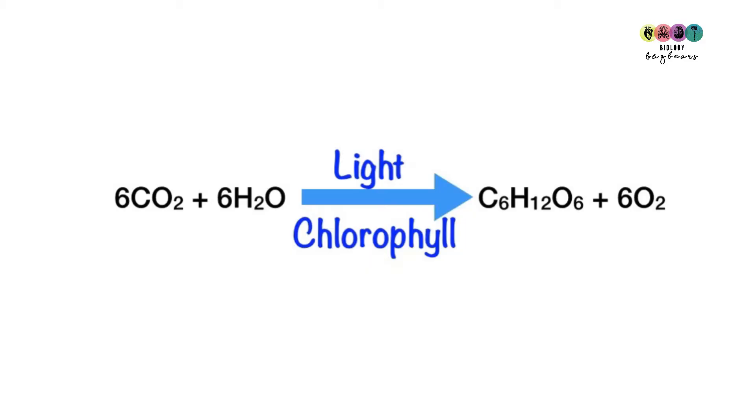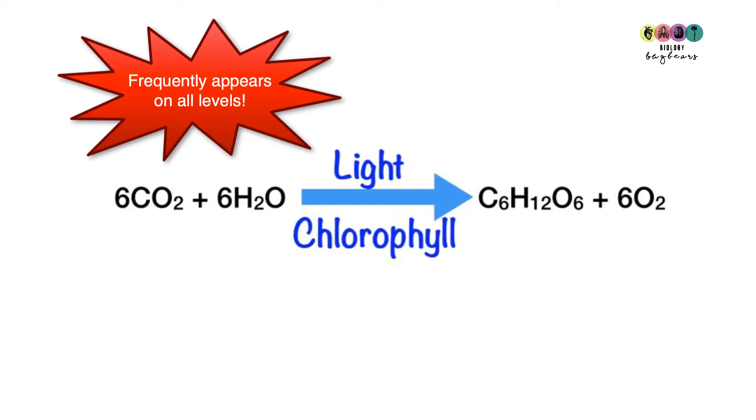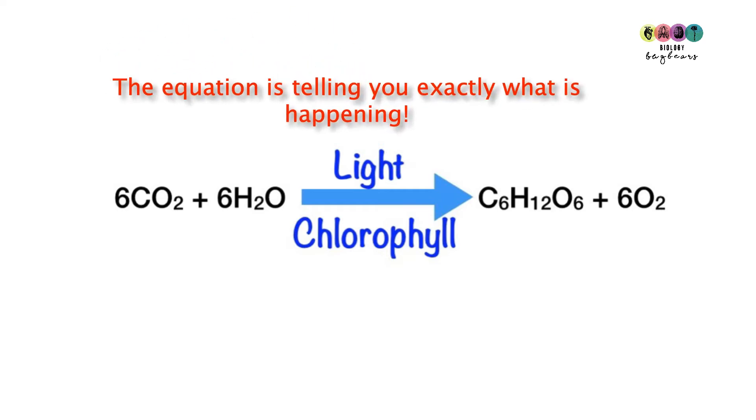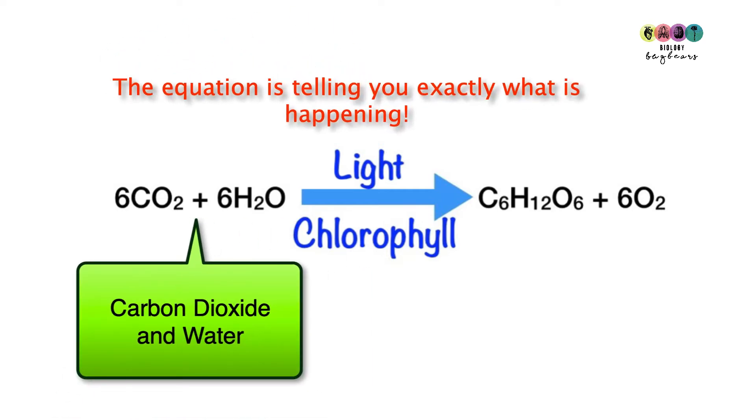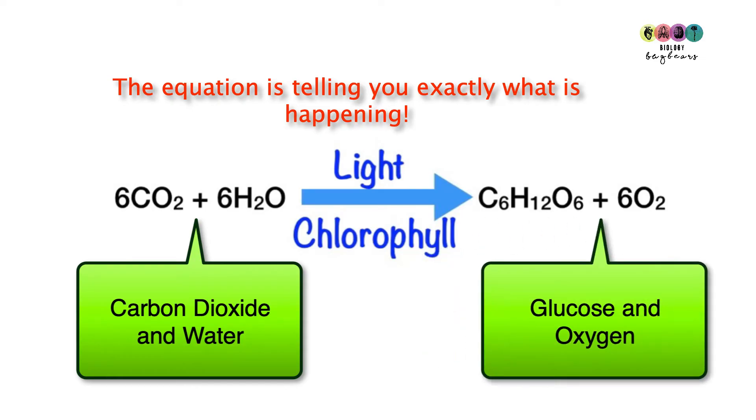A good place to start with photosynthesis is with the equation. It always appears on exam papers and you have to know the balanced version. It tells you exactly what's happening in the process, so carbon dioxide and water will be combined using light energy trapped by this green pigment chlorophyll to make sugar glucose and oxygen.